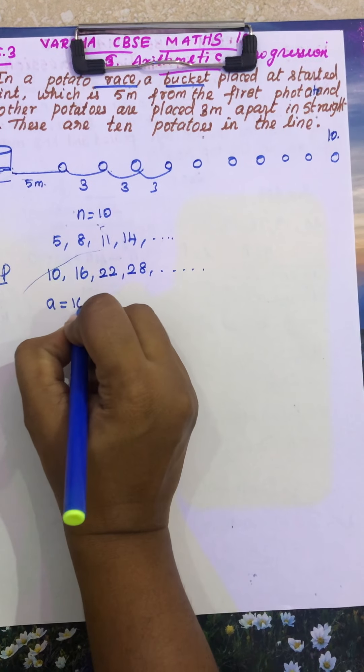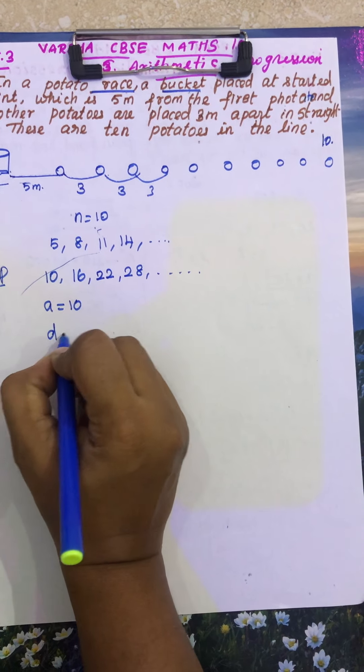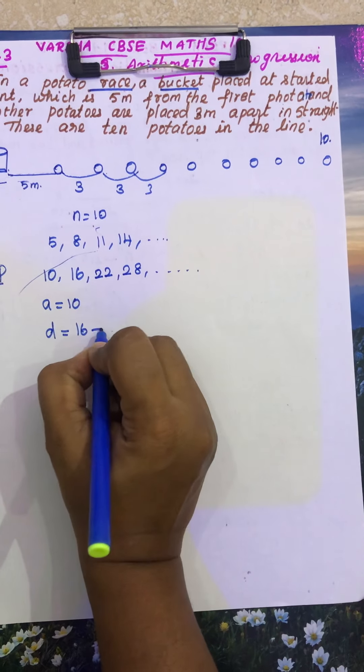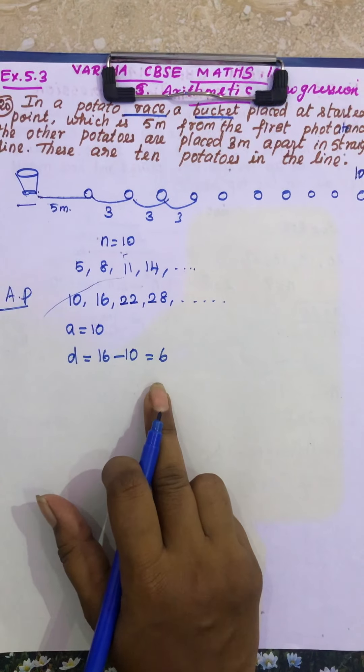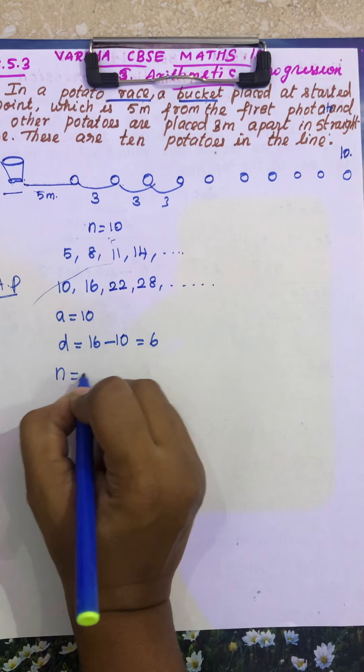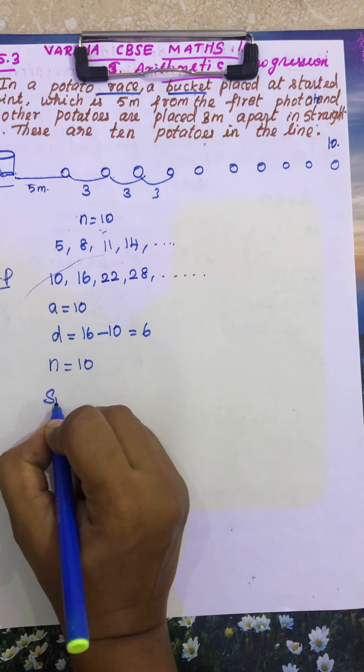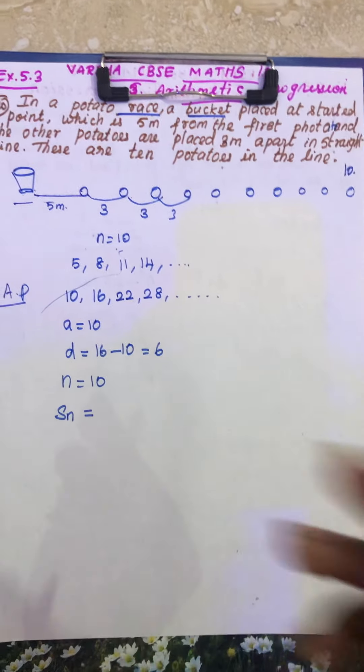See, so what is your A, it is 10, what is your D, second term minus first term, this is 6. So what is your N, that is 10, so you have to find SN.